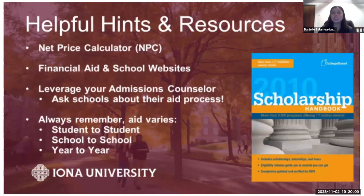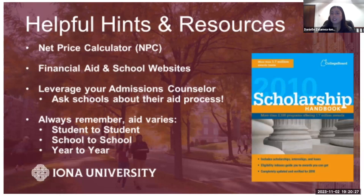Helpful hints and resources include the net price calculator, the school's financial aid website, and general resources on FAFSA.gov. Ask each school about their aid process because not every school is the same. Aid varies from student to student, school to school, and year to year — no two students' packages will be the same. I'd also recommend looking into private scholarships and applying to one or two a day, as they accumulate and can help with your overall university cost.